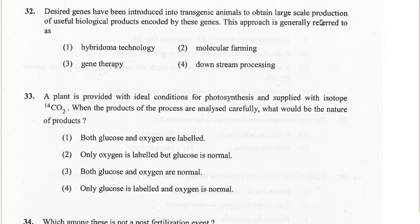Desired genes introduced into transgenic animals to obtain large-scale production of useful biological products encoded by those genes — this general approach is called molecular pharming.